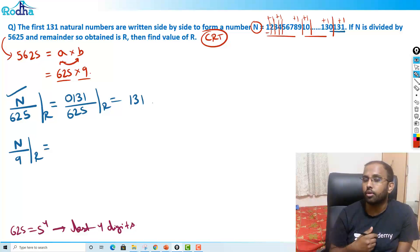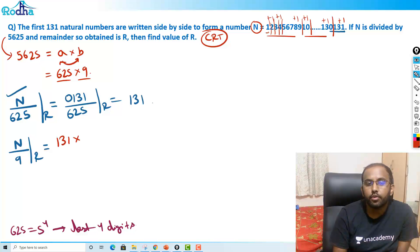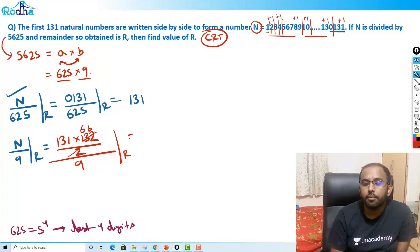That means if I add all these 131 natural numbers, what is the result? N × (N+1) / 2. So 131 × 132 / 2. This is the result, divided by 9 remainder. So this becomes 66 actually, and it becomes 131 × 66 by 9 remainder. Again divide by 9.